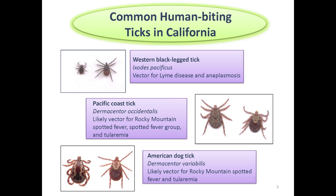Here are some pictures of common human-biting ticks in California and the diseases they spread. In each picture, the male tick is on the left and the female is on the right. The western black-legged tick, Ixodes pacificus, is a vector for Lyme disease and anaplasmosis.